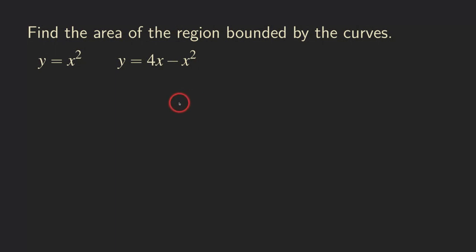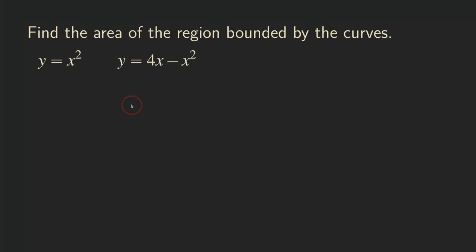So how do we do that? First thing, we need to draw the region, but before that, we need to come up with a good way of drawing it. One thing we can do is to find the intersections between the two curves, so that will make drawing the region a lot easier. So let's get started — we are going to first find the intersections.